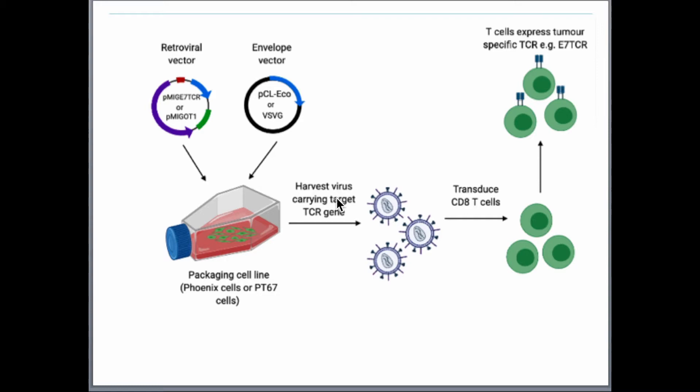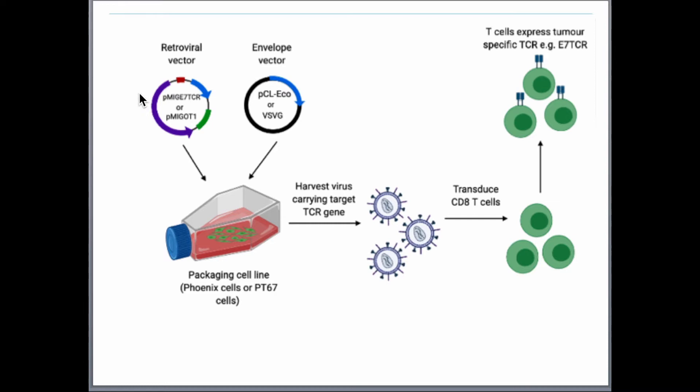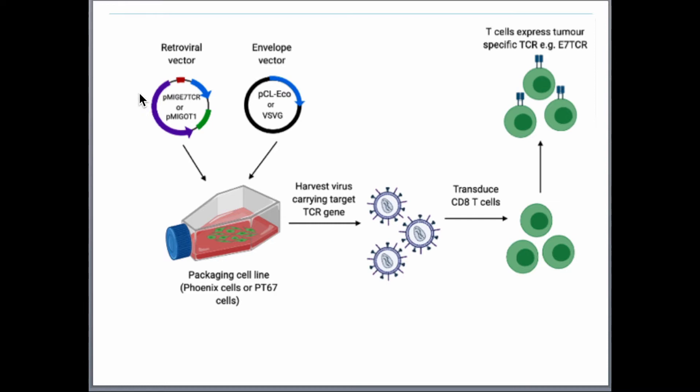Let's talk about the retroviral vector first. The PMIC E7 TCR carries an E7 TCR against the HLA-A2 restricted HPV16 E7 11–19 epitope, whereas the PMIC OT1 carries an OT1 TCR against the H2Kb-restricted chicken ovalbumin 257–264 epitope. Bear in mind that these retroviral vectors are MSCV-based. We used MSCV-based retroviral vector instead of MMLV-based vector because we wanted to optimize introduction of TCR gene into non-activated, slow-dividing naive mouse or human T cells.